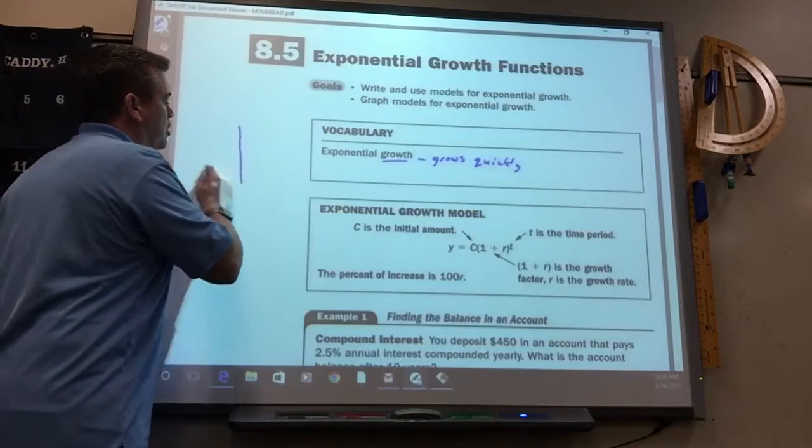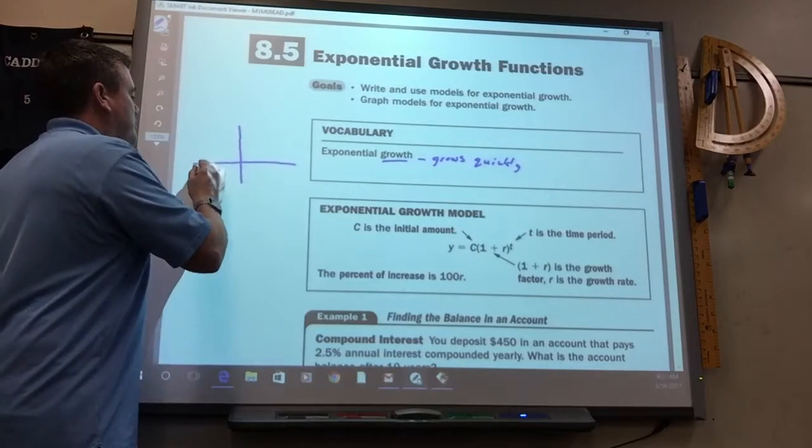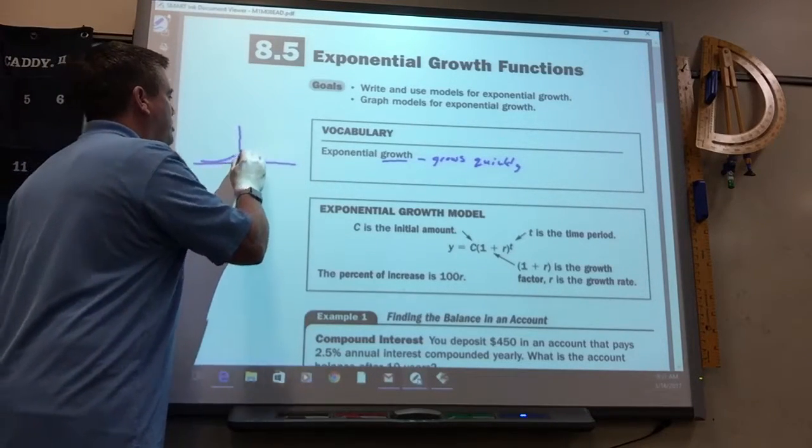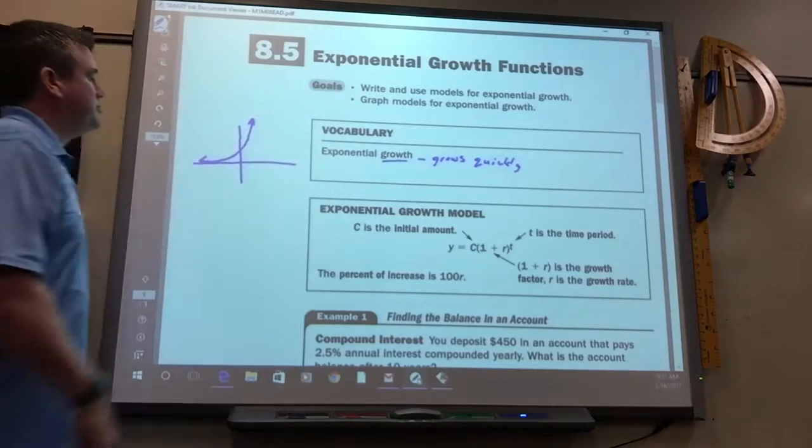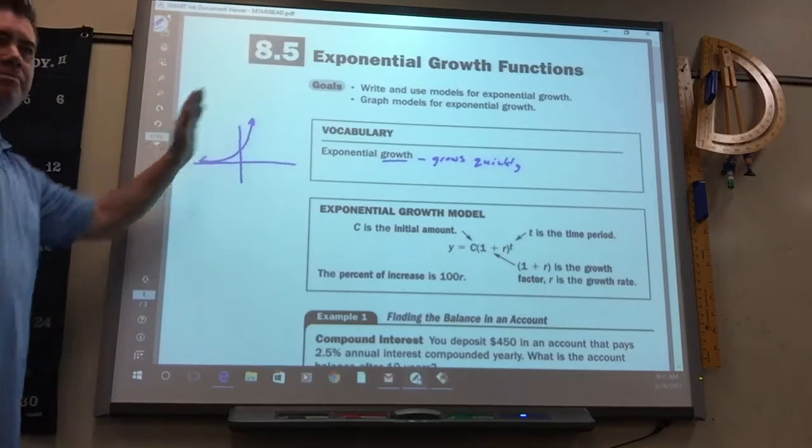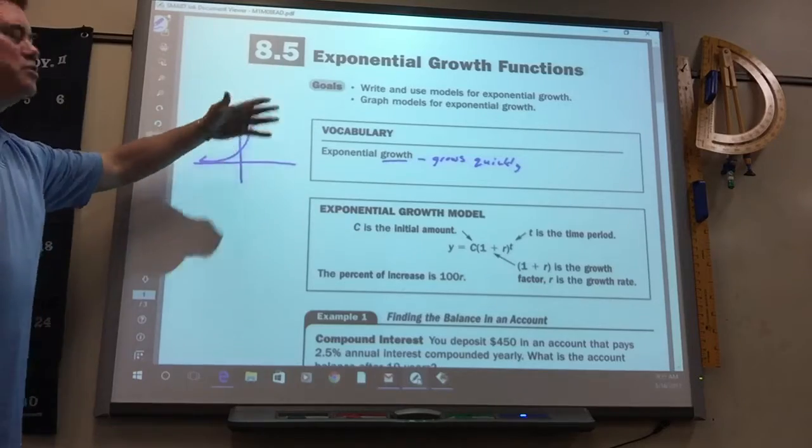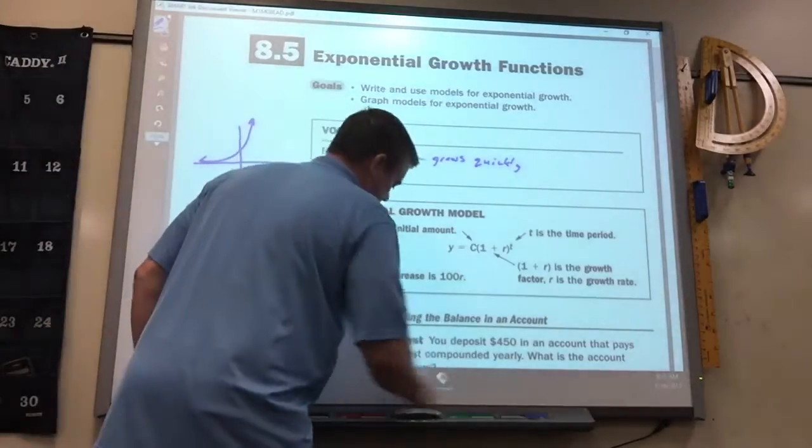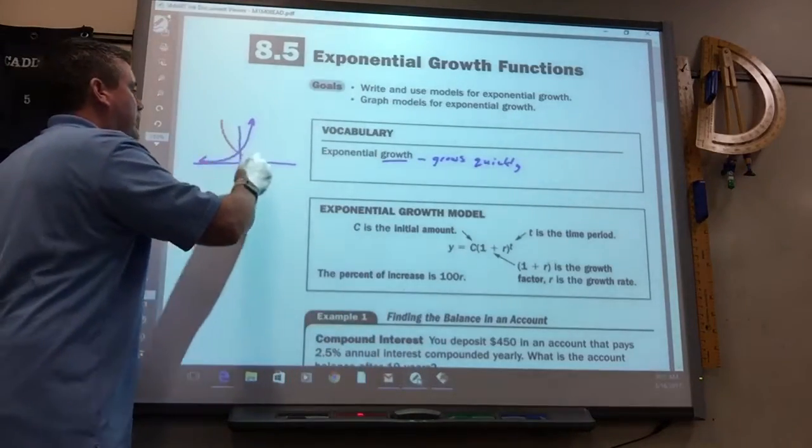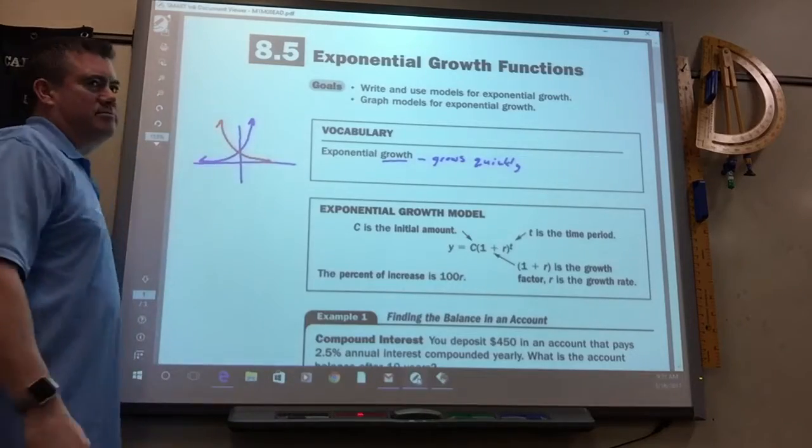An exponential growth graph is gonna start and then it's gonna start climbing quick like that. So it goes up from left to right. Next we're doing an exponential decay, which would start high and go low like that.